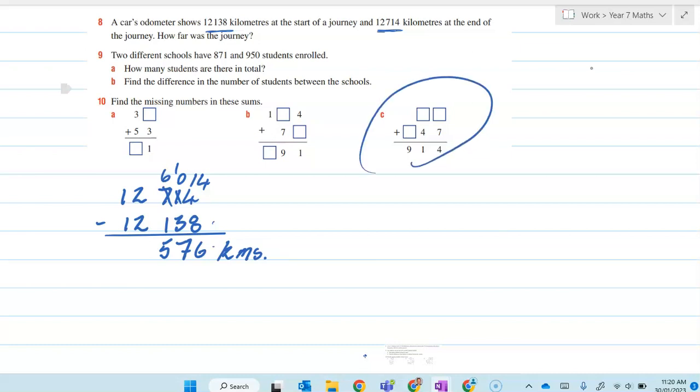Let's have a look at this one here. We don't know what this one is. So 7 plus something has to equal 4. So it can only be 7. So that'd be 14, put down the 4,